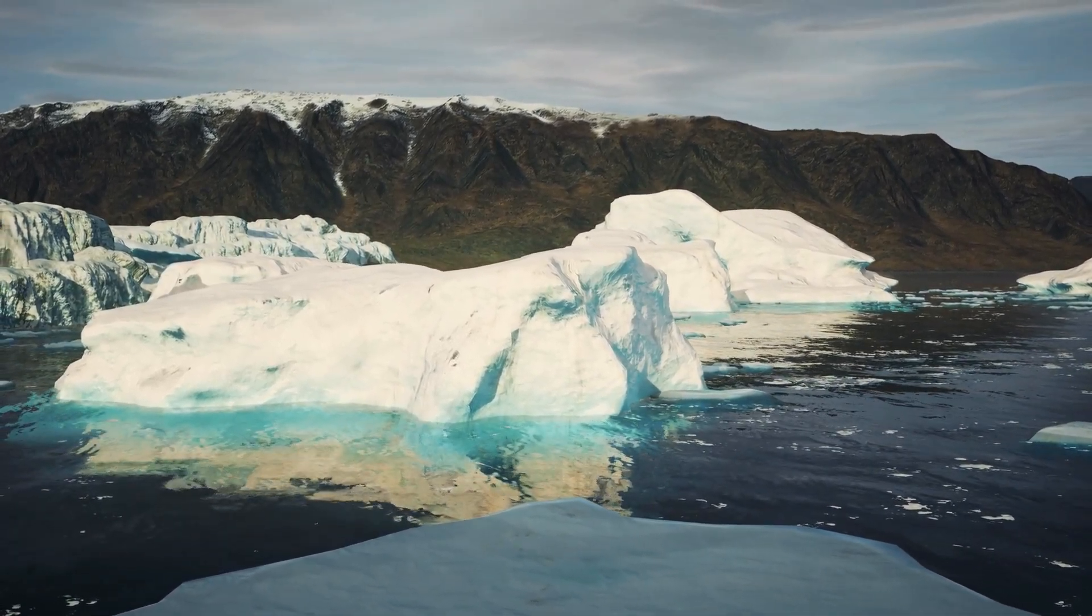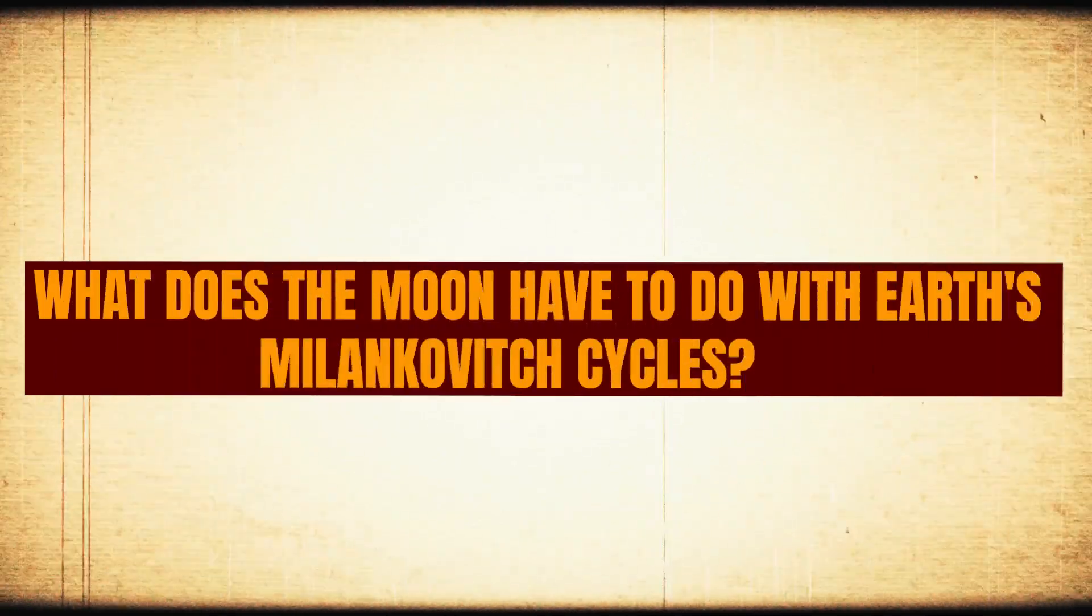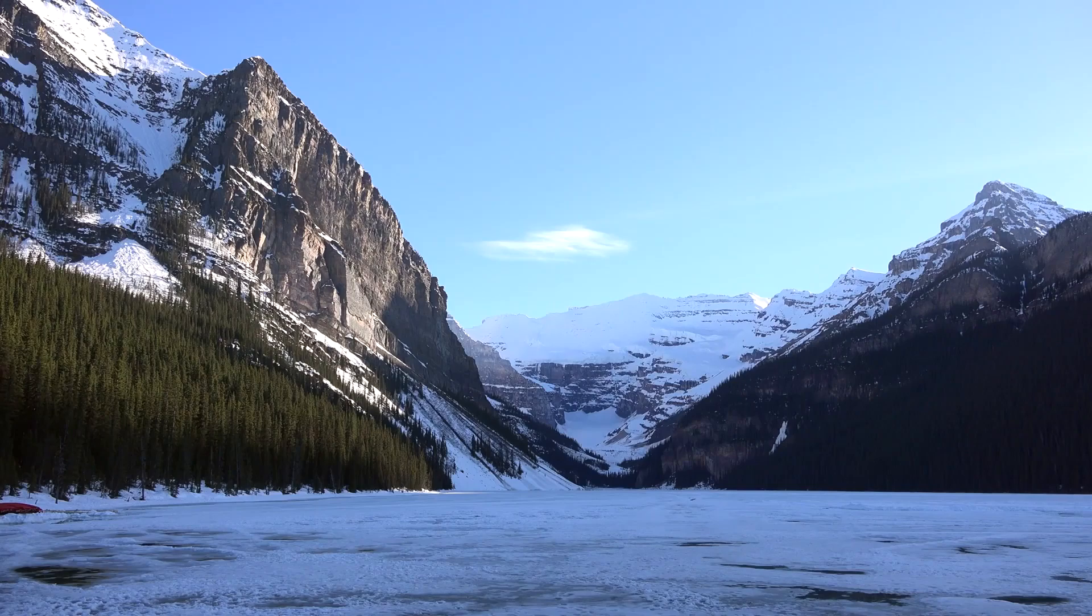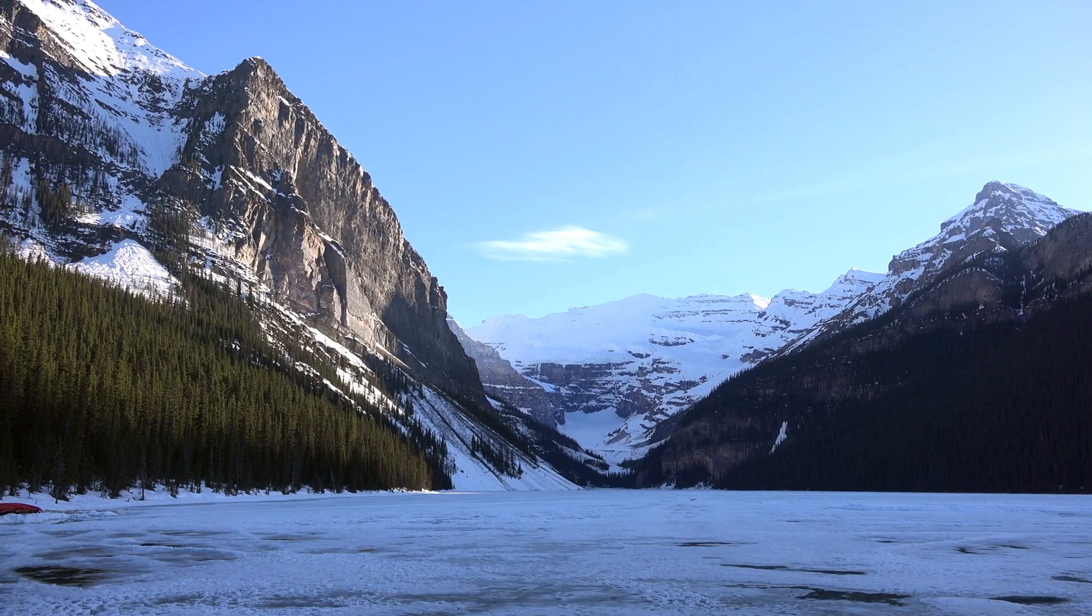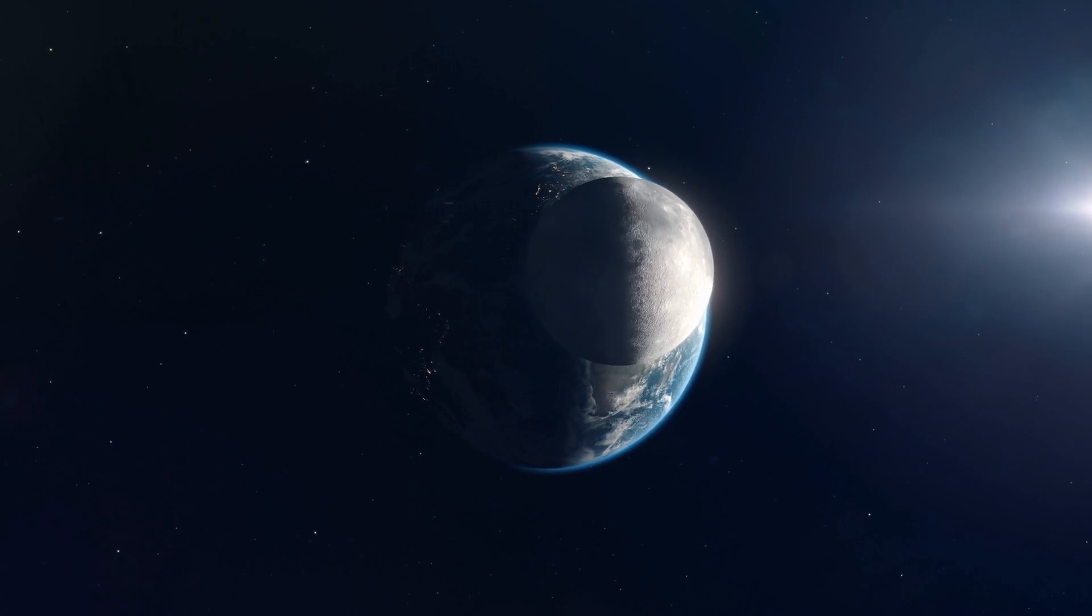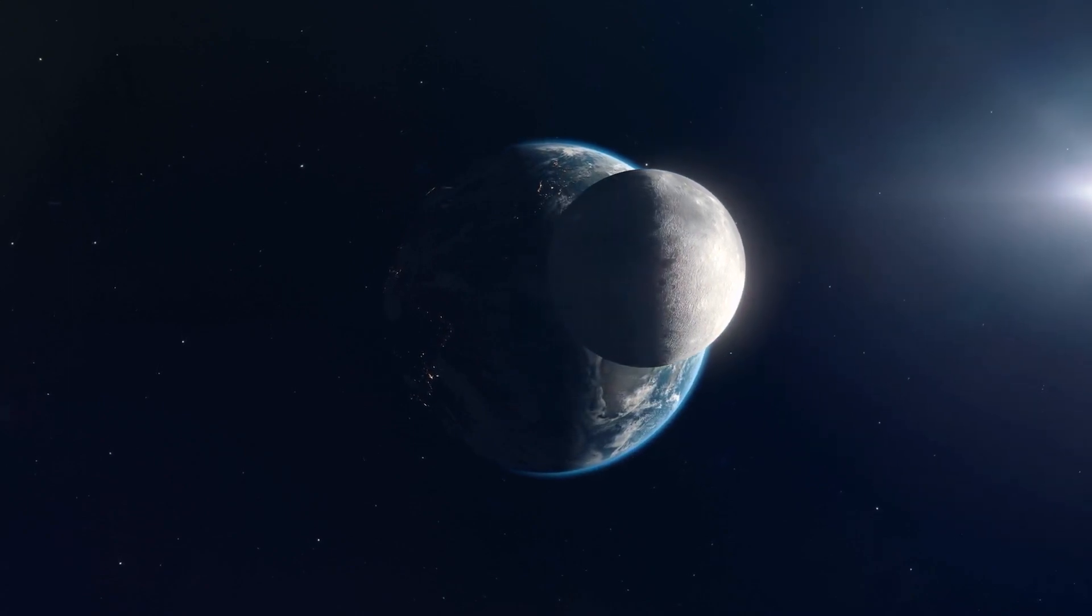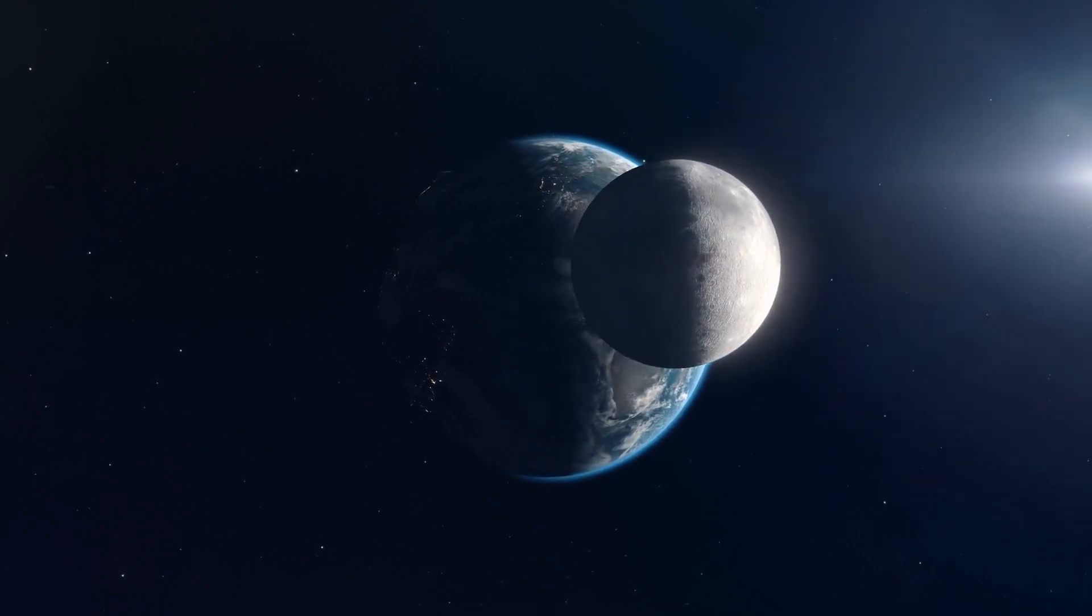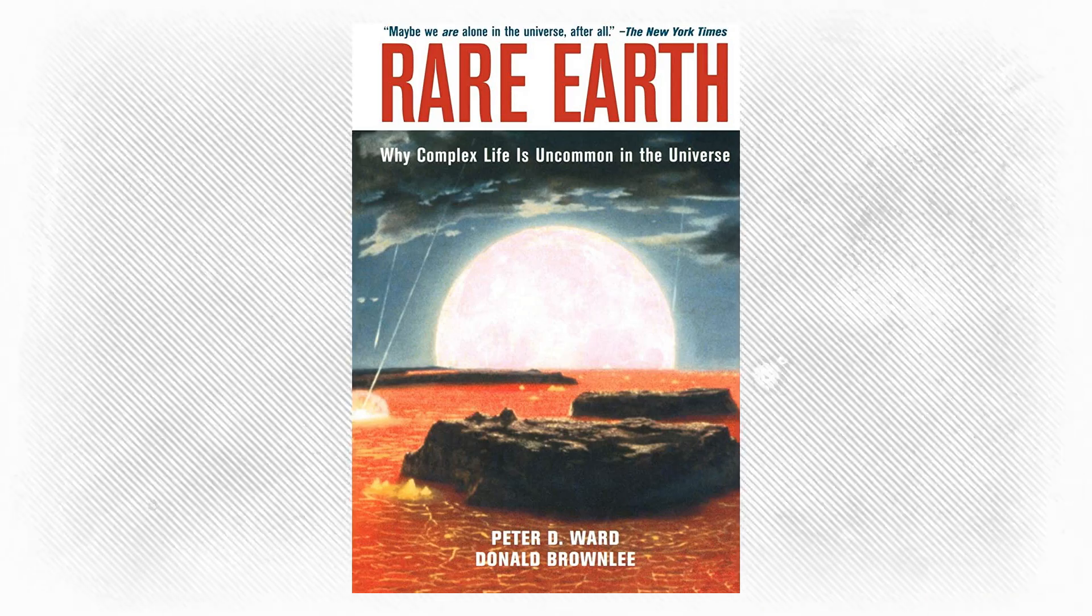The Earth's climate would likely be far less friendly if it weren't for the planet's large moon. Some scientists think that without the moon, life on Earth may not be possible at all. This theory was put forward by astrobiologist Peter Ward and evolutionary biologist Donald Brownlee in their book Rare Earth, published in 2000.